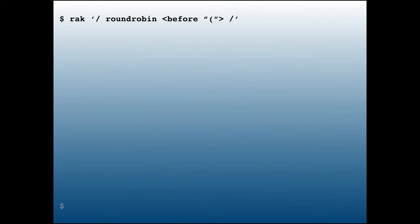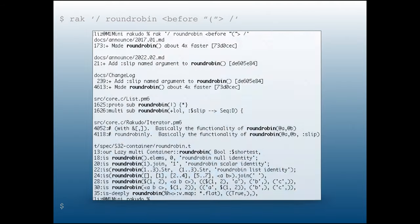A regular expression is specified by a slash at the beginning and end of the string, which should look familiar. You'll probably need to quote it for the shell. Anything that starts and ends with a slash is treated as a regular expression. In this case we look for 'round-robin' before an open parenthesis. That gives all matches in RAKUDO, and notice that 'round-robin' is highlighted and bolded, but the parenthesis is not — because it wasn't part of the match.